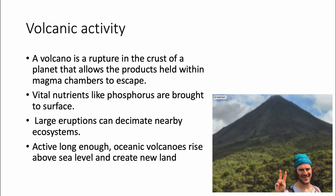Large eruptions can totally decimate nearby ecosystems. A good eruption will absolutely obliterate an ecosystem, and that ecosystem will basically have to start from scratch. Sometimes the entire ecosystem, even at the microbial level, is totally sterilized. You have to wait for the succession of other species to build that ecosystem back to its previous state.